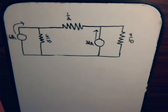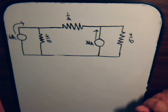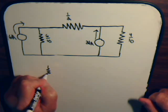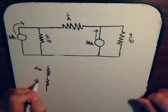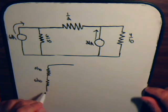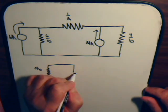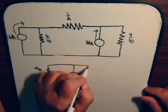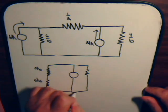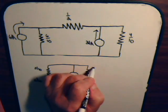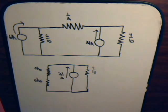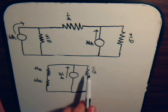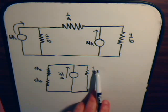If we eliminate the 6-amp current source, the circuit is redrawn with the one-half ohm and the six-tenths ohm resistors in series, together with the 21-amp current source and the four-tenths ohm resistor. This series branch has a total resistance of eleven-tenths ohms and is in parallel with the four-tenths ohm branch.